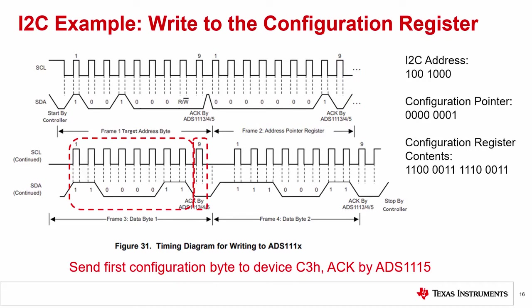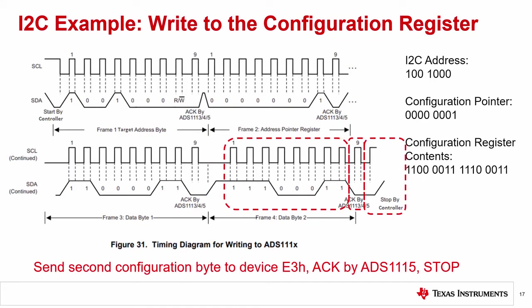Now we start to send in the configuration register data one byte at a time. For this byte, we send in the first byte of the configuration register. Here we send 11000011 to the ADS-1115. The ADS-1115 acknowledges the first byte and pulls down on SDA for the last bit. Finally, we send in the last byte of the configuration register. Here we send 11100011 to the ADS-1115. The ADS-1115 acknowledges the last byte and pulls down on SDA for the last bit. At the end, the controller releases the bus by issuing a stop condition. SCL is released high, and then SDA is released high.